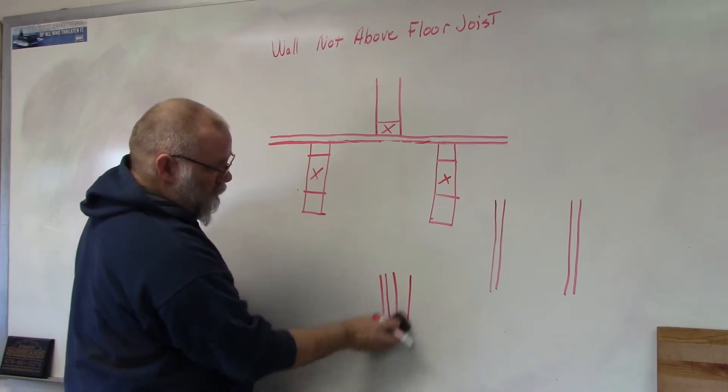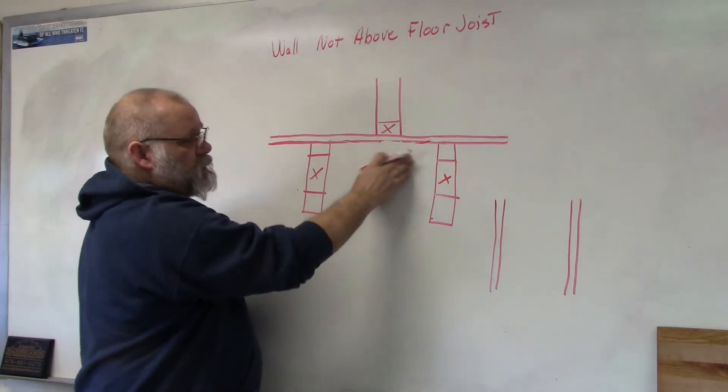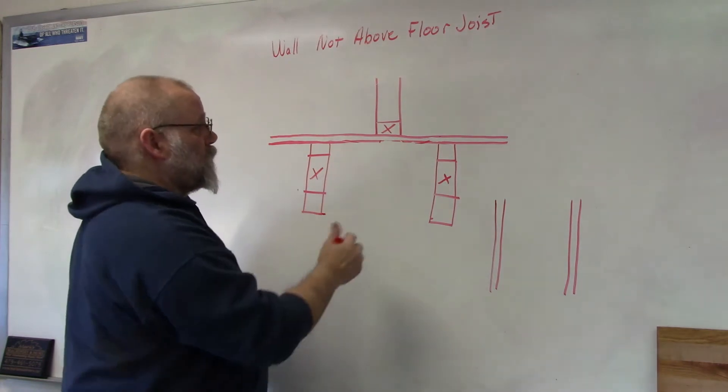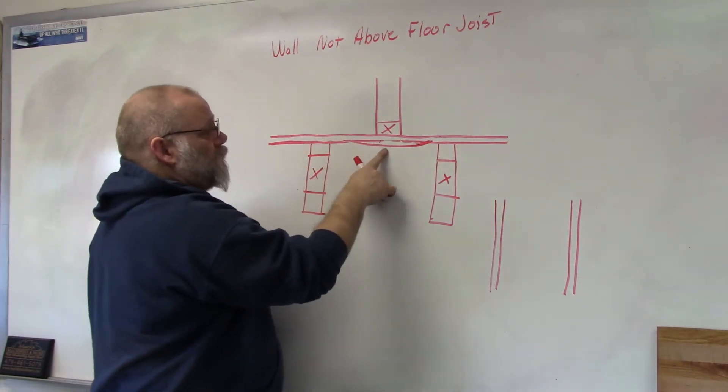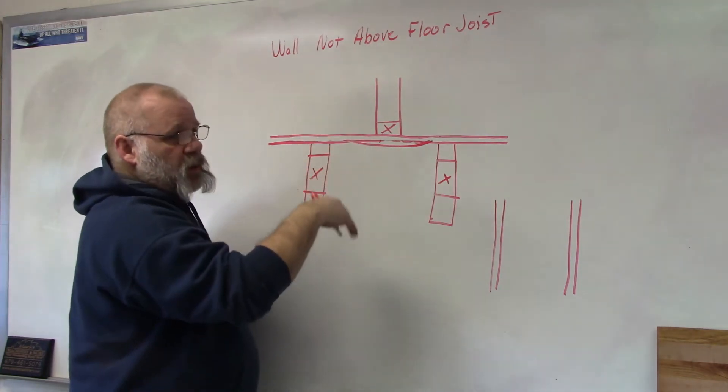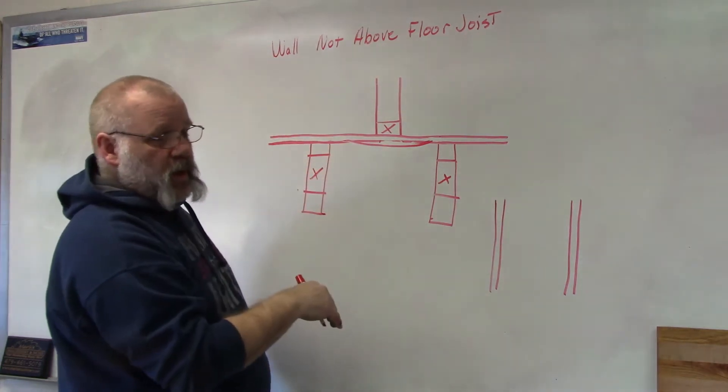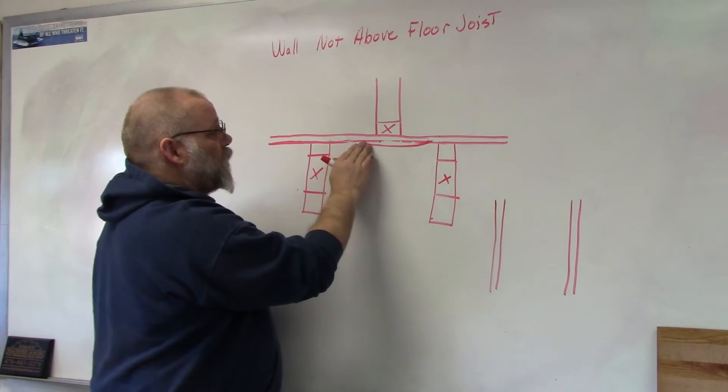What is supporting that? The only thing that's supporting that is that subfloor. So over time what's going to happen is your subfloor is going to settle and your wall is going to settle and that means everything above it's going to settle. So you want to avoid that.